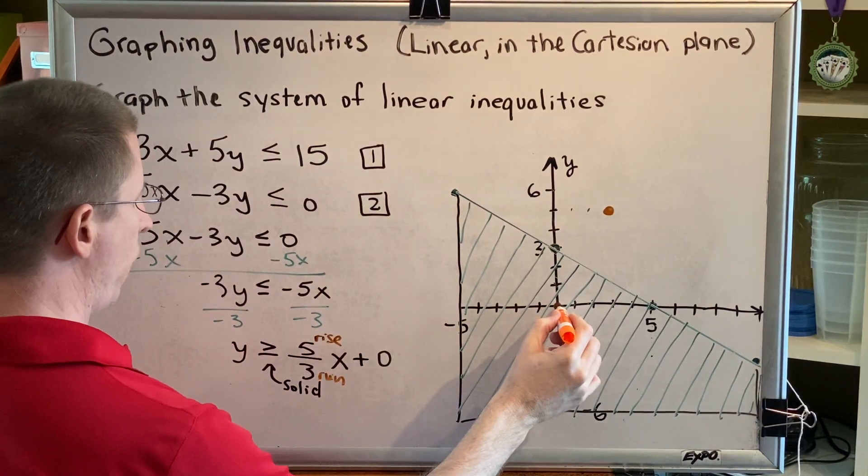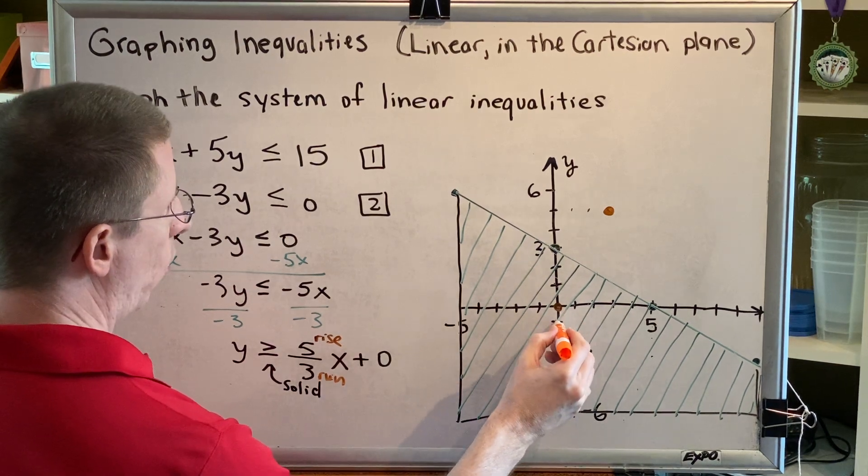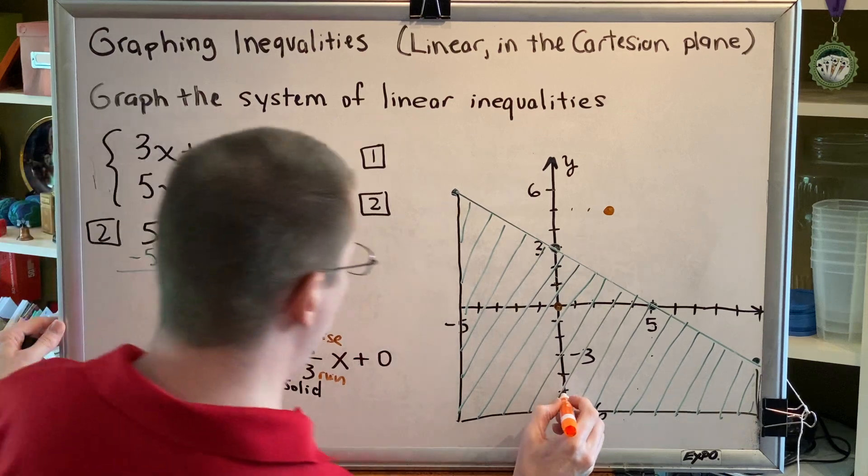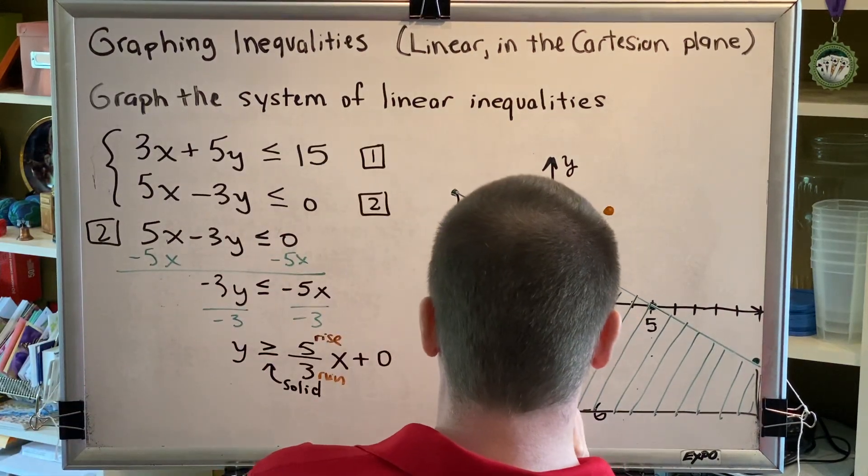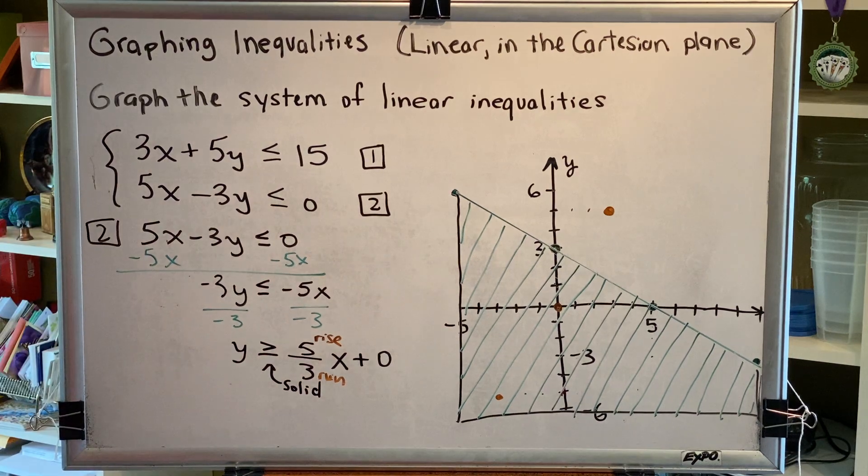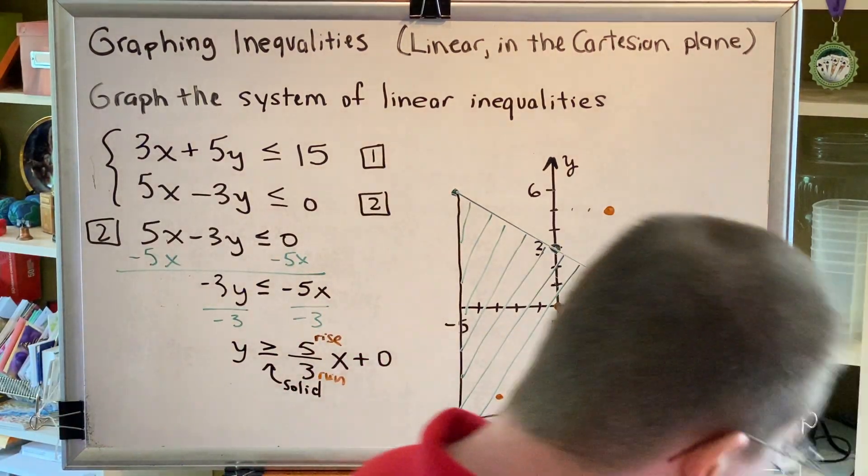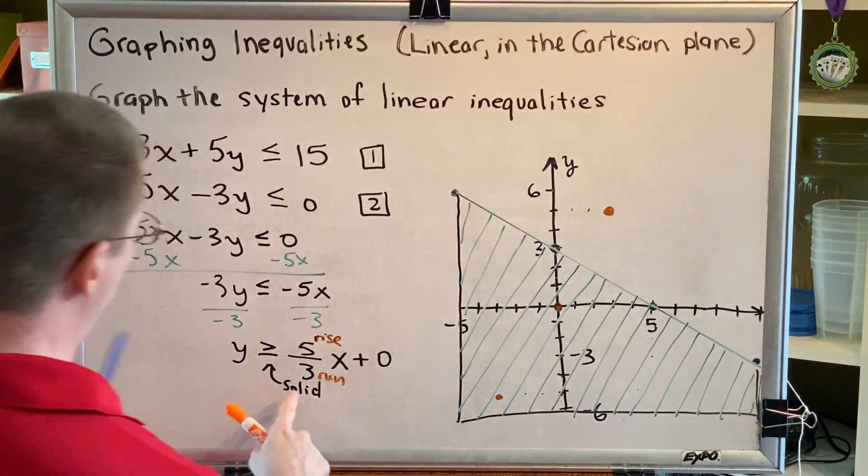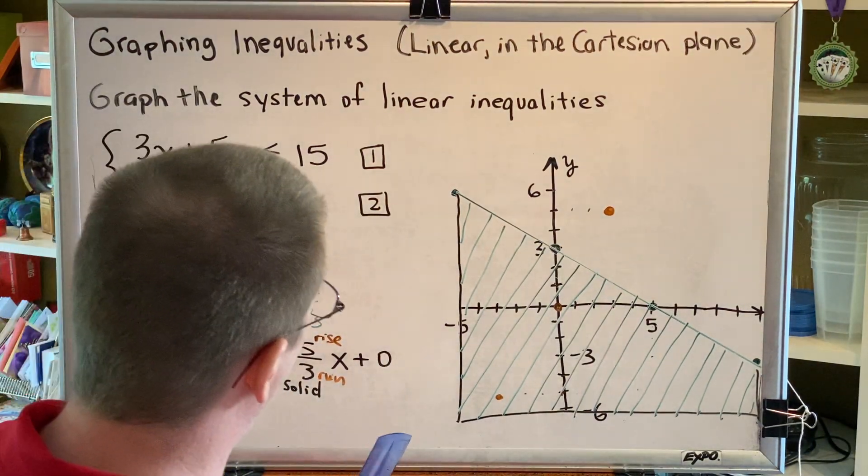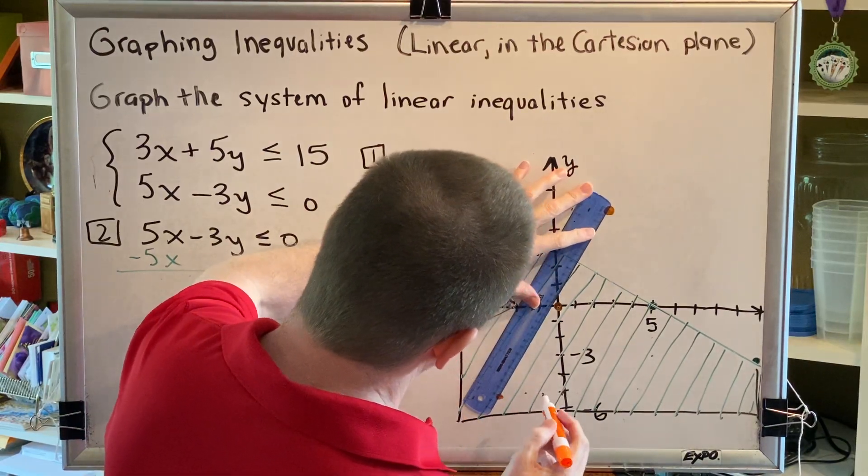Instead of up 5, right 3, I'm going to go down 5, left 3. Now that I have my dots, I can go ahead and connect those using my straight edge. Remember we said that this is going to be a solid line, so I'm going to draw a solid line through these three points that we have plotted.